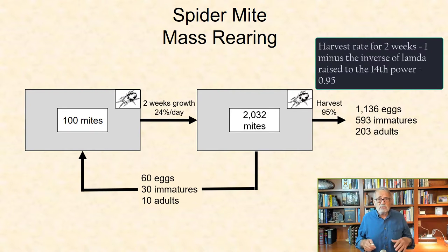Or 1 minus the inverse of lambda, raised to the 14th power, yields the fraction 0.95 that can be removed from the population every two weeks to maintain replacement levels.